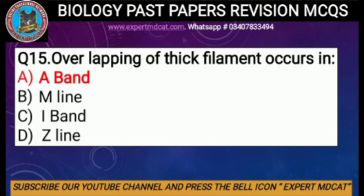Question number fifteen: overlapping of thick filament occurs in — options are A band, M line, I band, or Z line. The correct option is A, A band, because thick filament overlapping occurs in the A band, while thin filament overlapping occurs in the I band and partly into the A band. Thank you so much for watching, this is all from today's video.